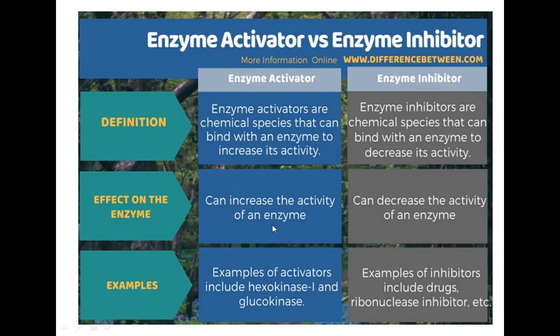An activator will increase enzymatic activity. Examples of activators include hexokinase and glucokinase, which speed up reactions. Some inhibitors include ribonuclease inhibitors and certain drugs that inhibit enzymatic reactions. This is why doctors ask patients about allergic conditions or immunological effects when prescribing drugs, because taking certain drugs alongside food can directly inhibit the digestion process and decrease the enzymatic activity of digestive enzymes.